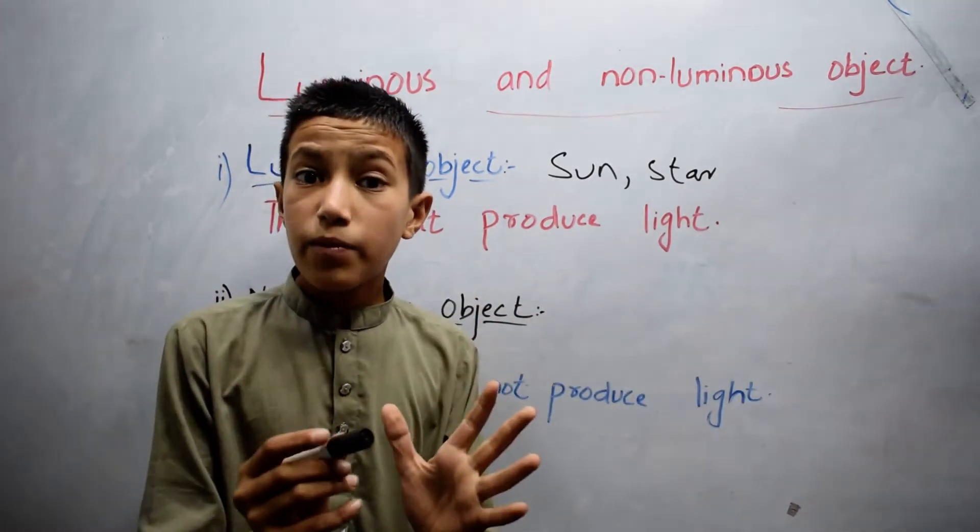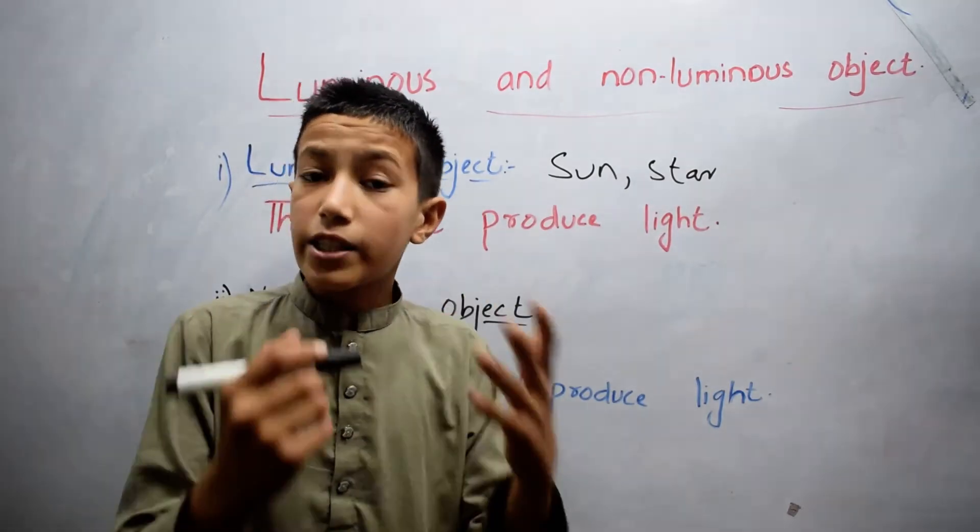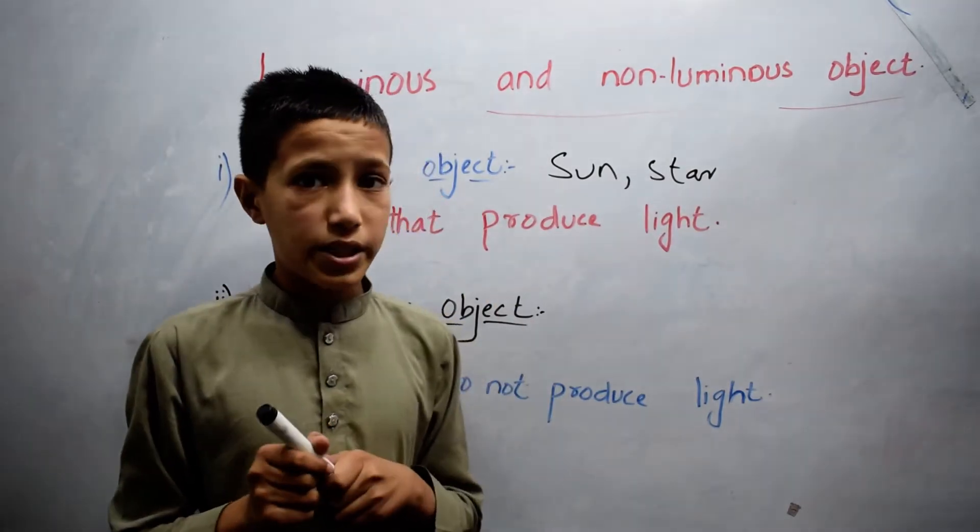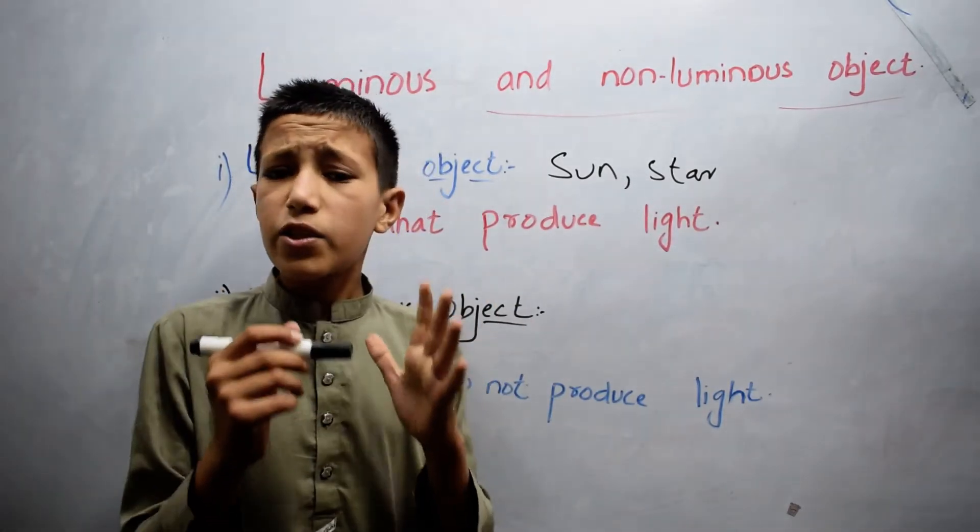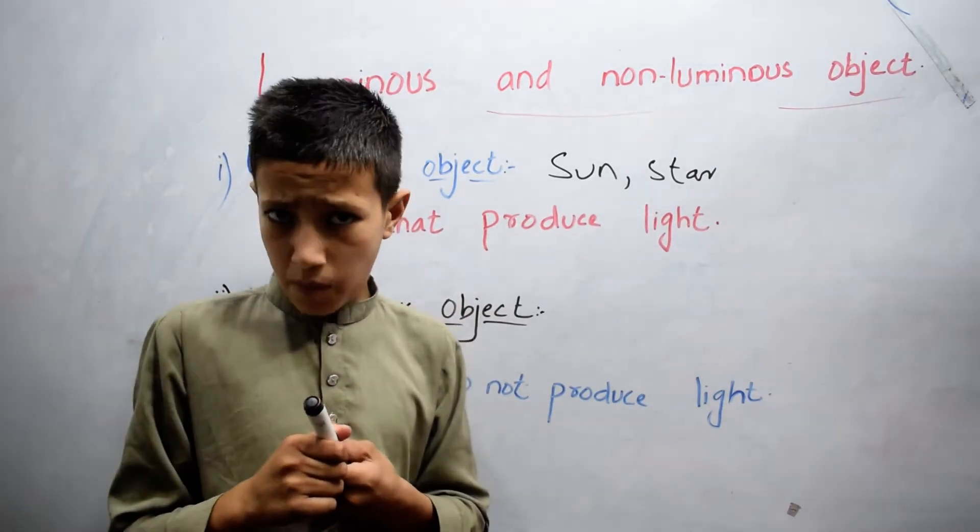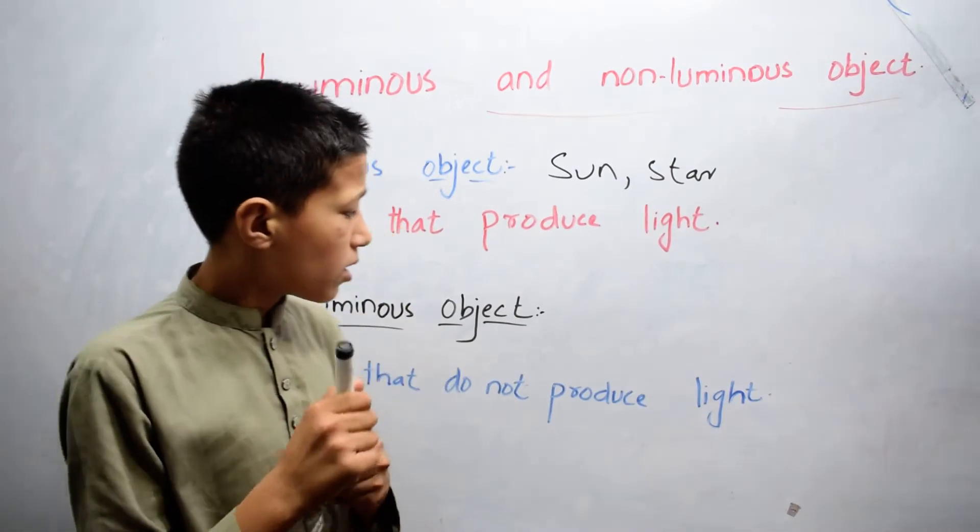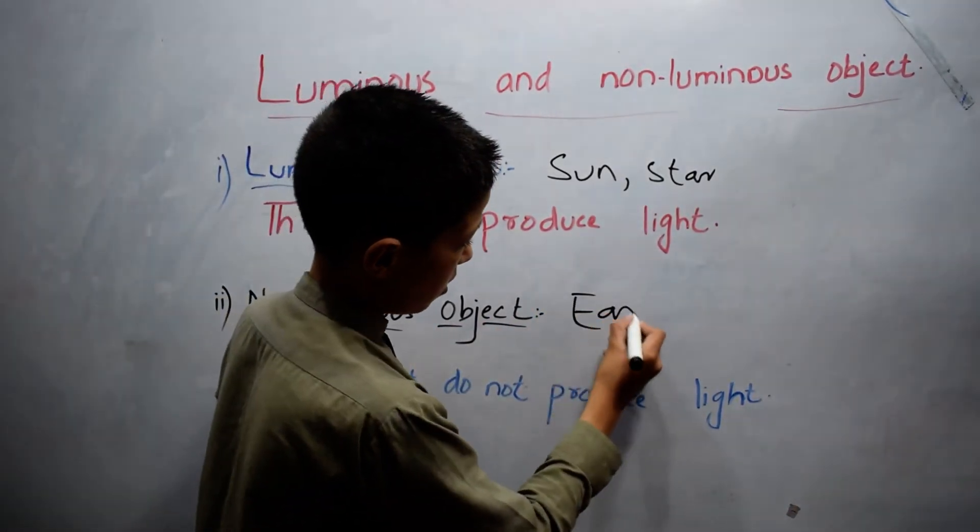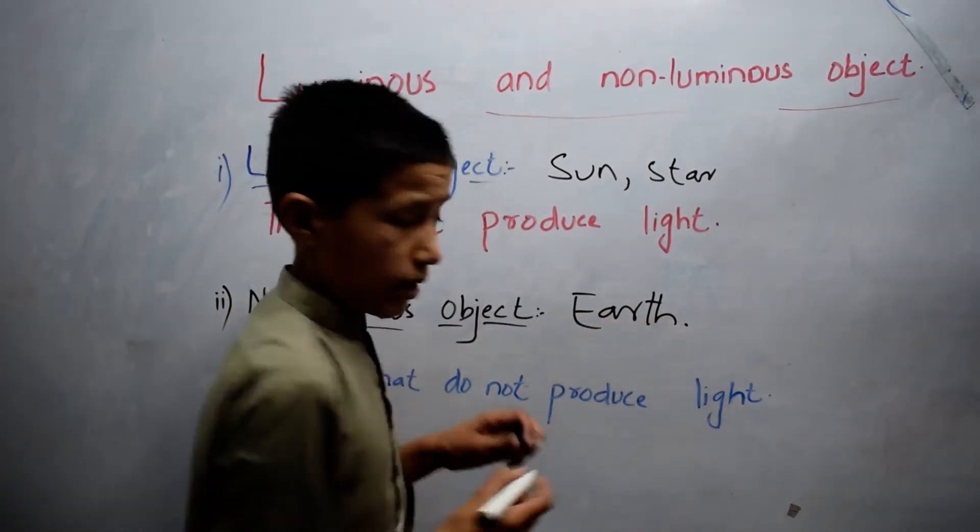They reflect some of the light they receive from luminous bodies. Objects which need light to be seen are called non-luminous bodies. For example, earth.